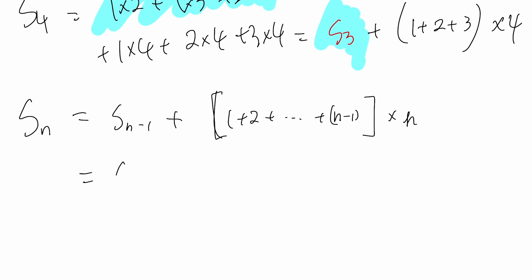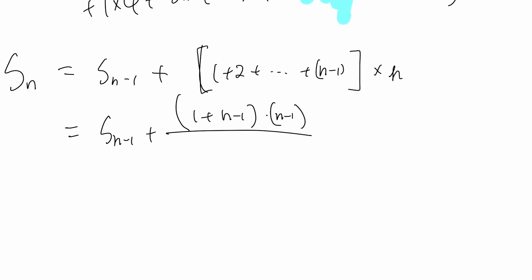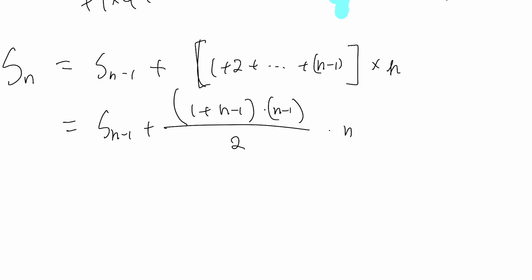Using the arithmetic sum formula, we get [(1 + (n-1)) times (n-1)] divided by 2, multiplied by n. This simplifies to (n-1) times n squared, divided by 2.